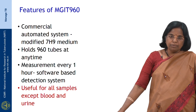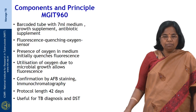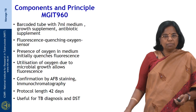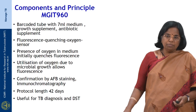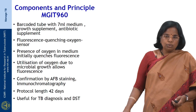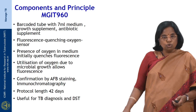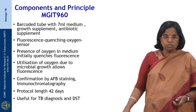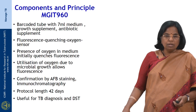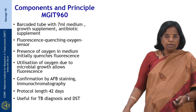The MGIT 960 makes use of a bar-coded tube with 7 ml medium to which growth supplement and antibiotic supplements are added. Every tube has a fluorescence-quenching oxygen sensor at the bottom. The presence of oxygen initially quenches fluorescence, and utilization of oxygen due to microbial growth allows fluorescence to be detected; when a cut-off is reached the tube is flagged positive by the instrument. Any tube flagged positive has to be confirmed by confirmatory tests such as AFB staining or immunochromatography. The protocol length is 42 days for diagnosis of tuberculosis, and the system is useful for TB diagnosis as well as drug susceptibility testing.